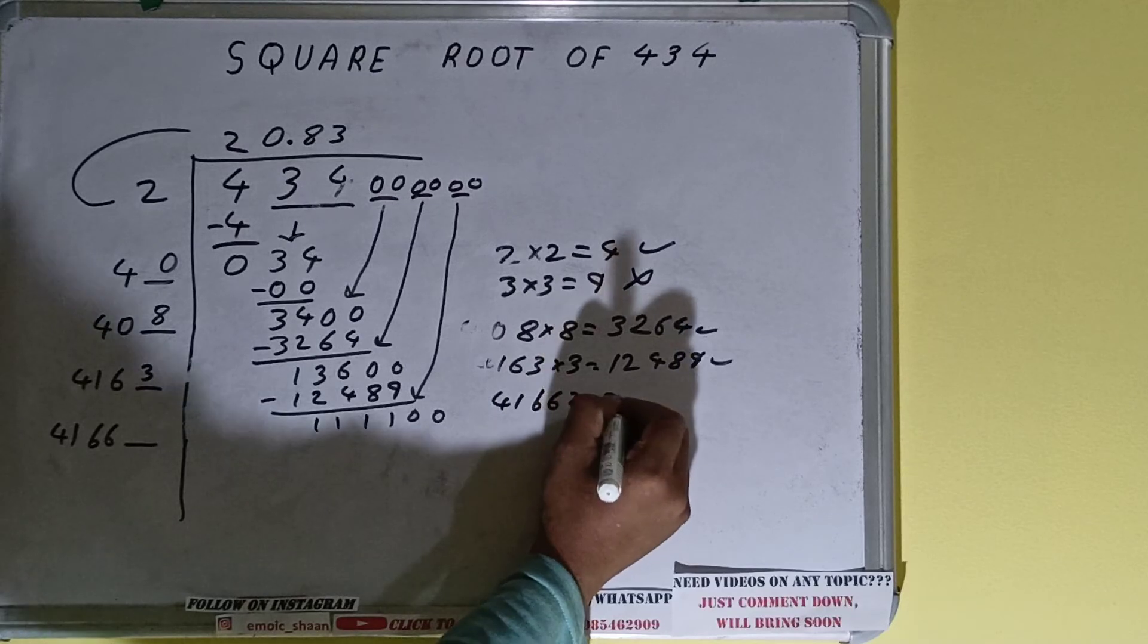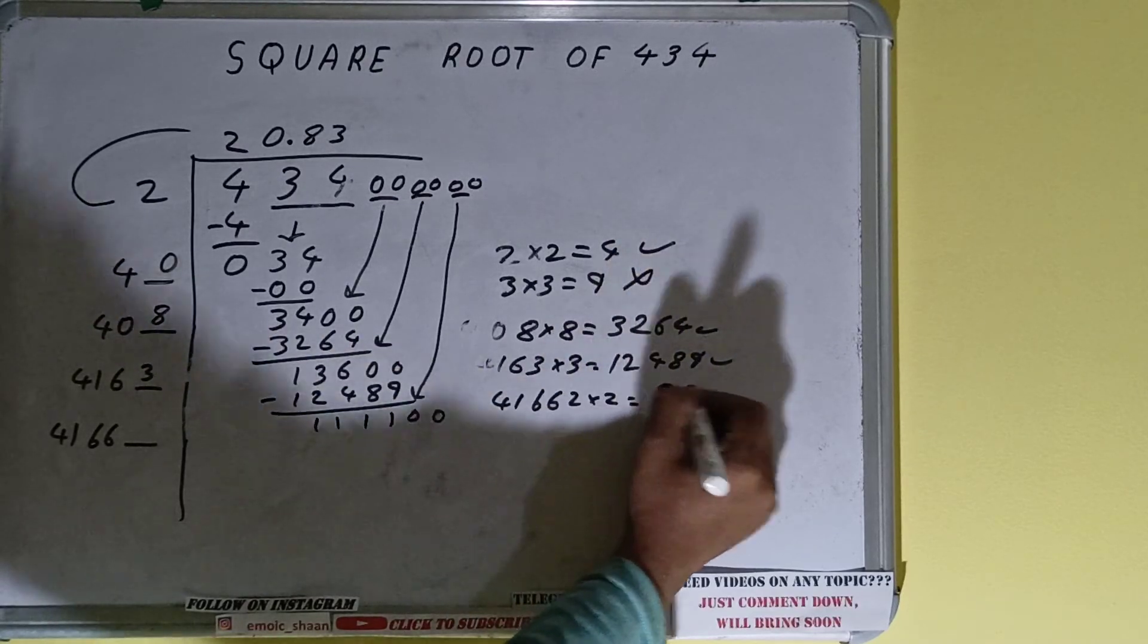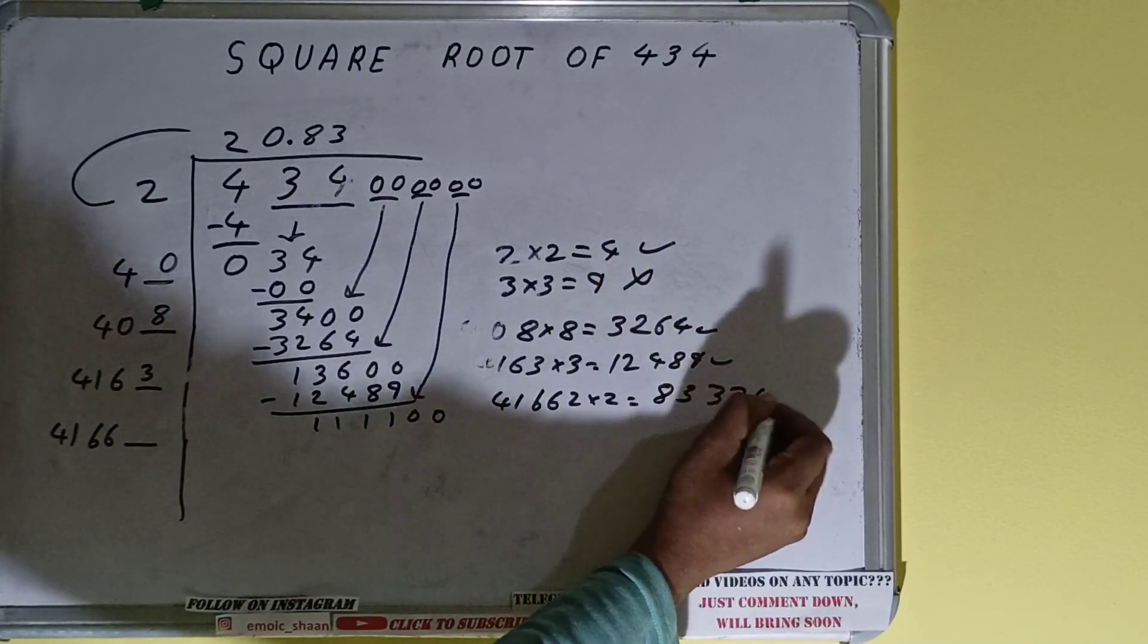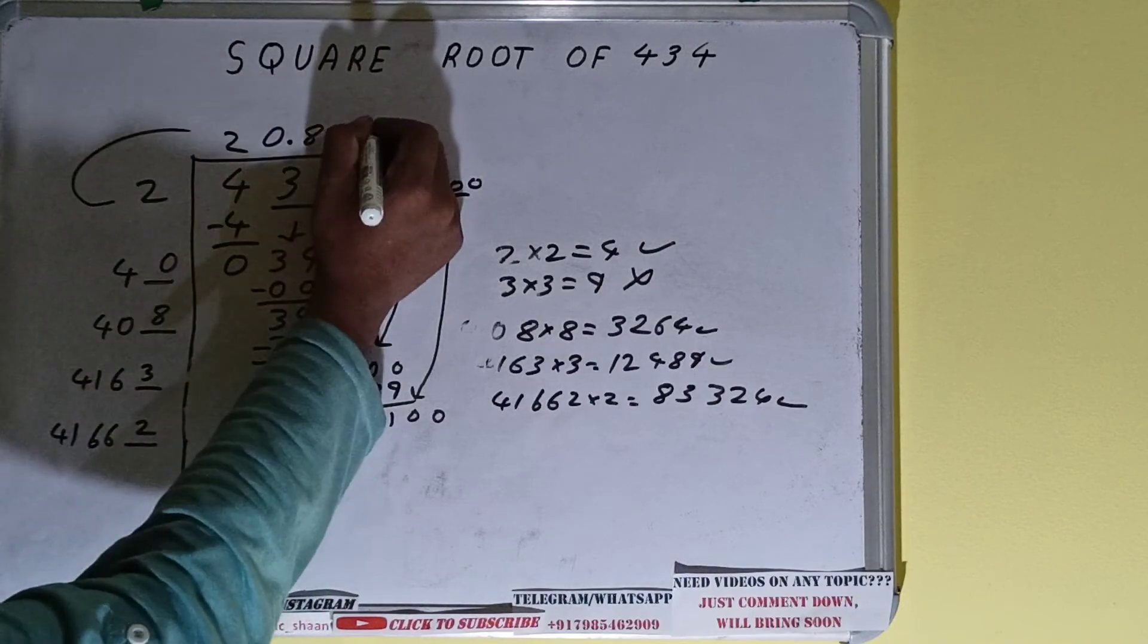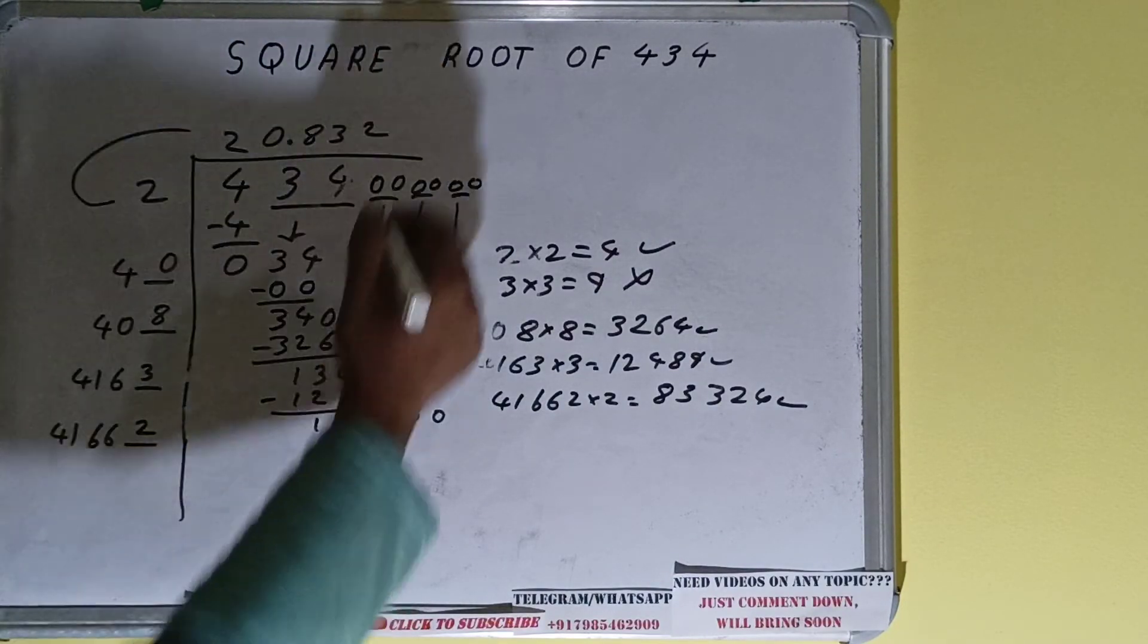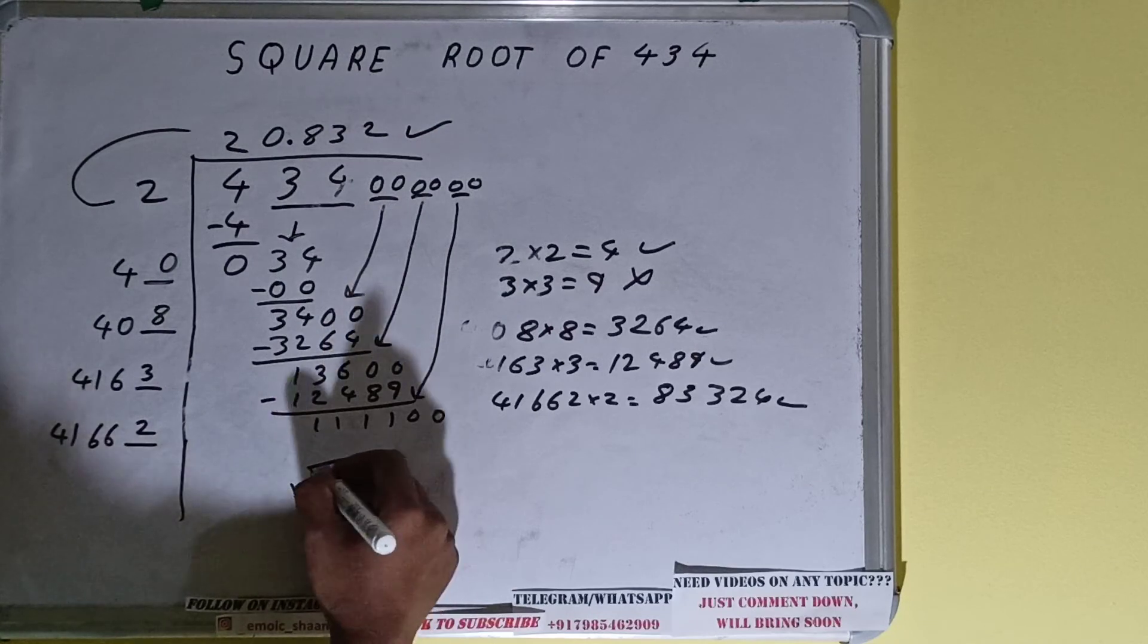So 41662 × 2 will be 83324, which is good to take. So 2 here and 2 here. But we don't need to calculate because we got the answer correct up to three decimal places. So square root of 434 will be 20.832, and that would be the answer.